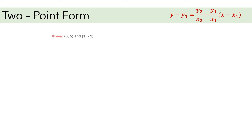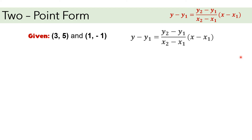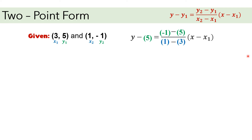Let us have more examples. Given (3, 5) and (1, negative 1). We will use this two-point form: y minus y sub 1, and so on. Assign x sub 1, y sub 1 to the first given point (3, 5), and x sub 2, y sub 2 to the second given point (1, negative 1). Then let's substitute one by one: y sub 1 is positive 5, y sub 2 is negative 1, y sub 1 again is positive 5, x sub 2 is positive 1, x sub 1 is positive 3, and another x sub 1 is also positive 3. Then solve.